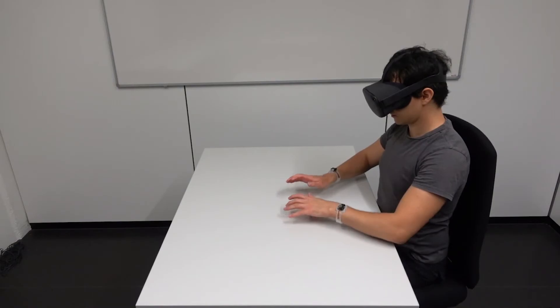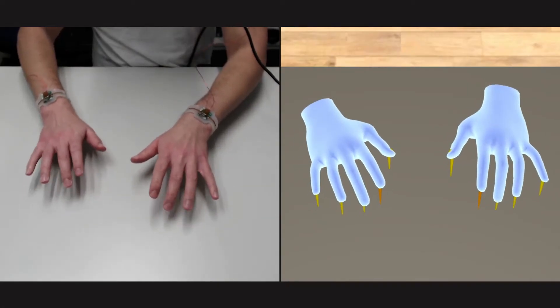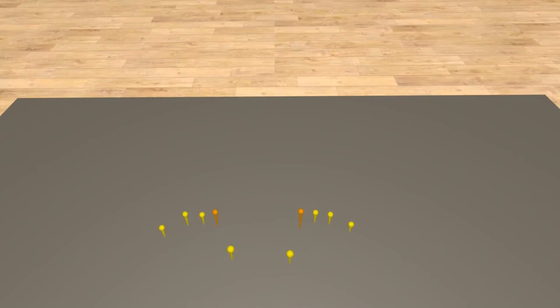TapID then fuses this tap detection and finger identification with the hand poses tracked by the headset to trigger input at the correct fingertip location in VR.